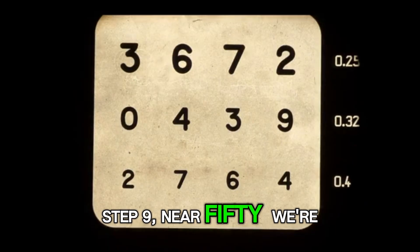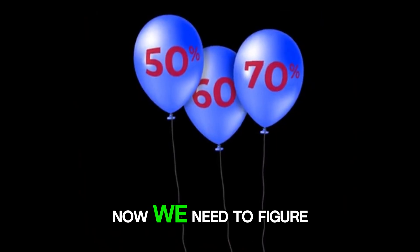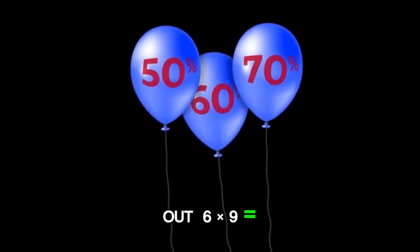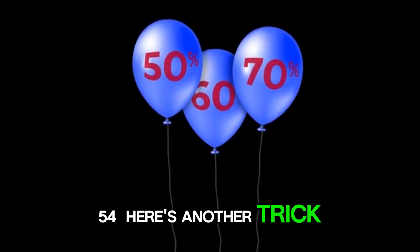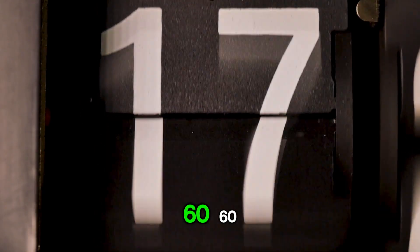Step 9. Near 50. We're so close. Now we need to figure out 6 times 9 equals 54. Here's another trick. Think of 6 less than 60. 60 minus 6 equals 54.